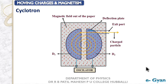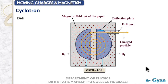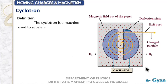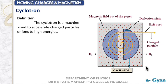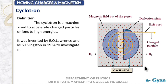Cyclotron is a machine which is used to accelerate charged particles or ions to high energy — high kinetic energy. This was invented by Lawrence and Livingston in 1934. They used this to study nuclear structure.